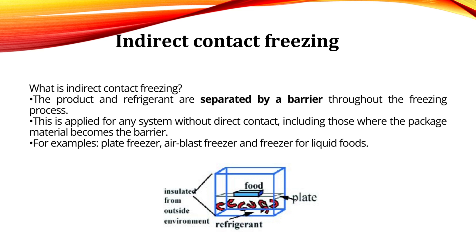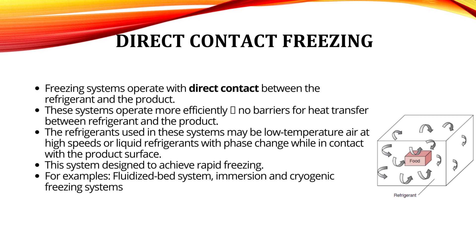Indirect contact freezing is a process where the product and refrigerant are separated by a barrier; packaged material can also serve as the barrier. Plate freezers, air blast freezers, and freezers for liquid foods are examples of indirect contact freezing. Direct contact freezing is designed for rapid freezing and operates with direct contact between the refrigerant and the product, making it more efficient since there is no barrier. Examples of direct contact freezing include fluidized bed systems, immersion, and cryogenic freezing systems.